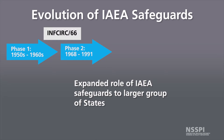Beginning in 1968 when the NPT was negotiated, all non-nuclear weapon member states of the NPT were required to have IAEA safeguards on any nuclear material within their borders. This is referred to as INFCIRC/153, Information Circular 153.